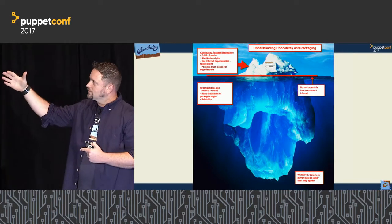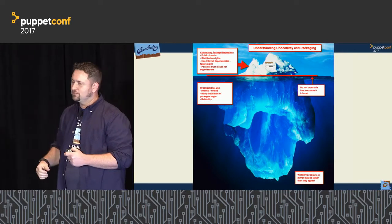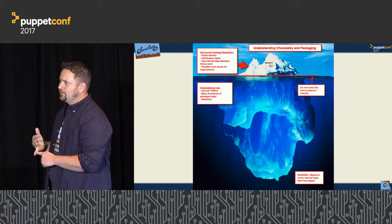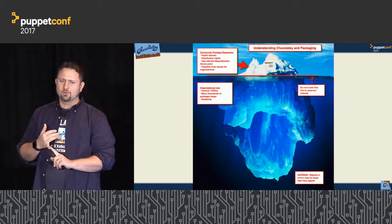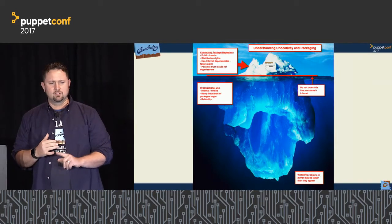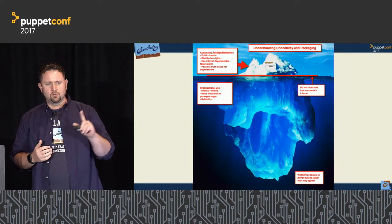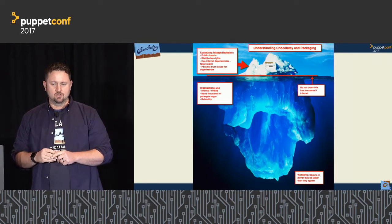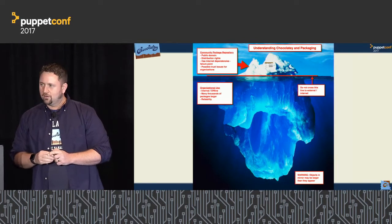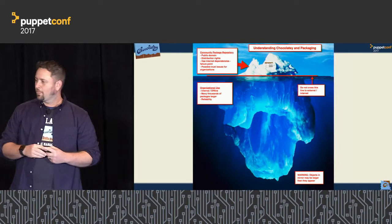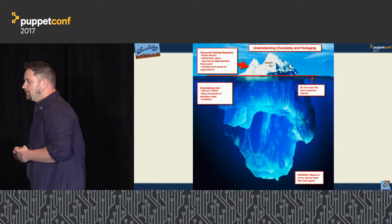To put it in perspective: in 2012 when the community repository had about 1,500 packages, just one organization using Chocolatey already had 2,500. So much bigger below the surface.